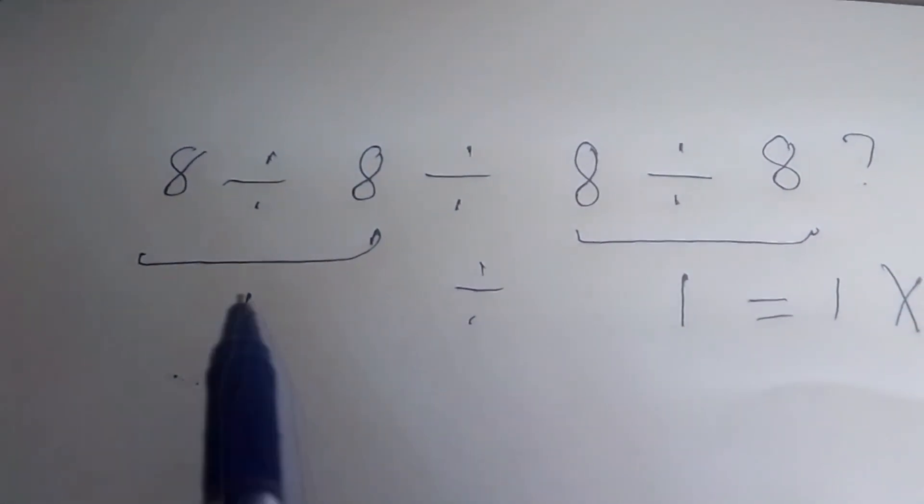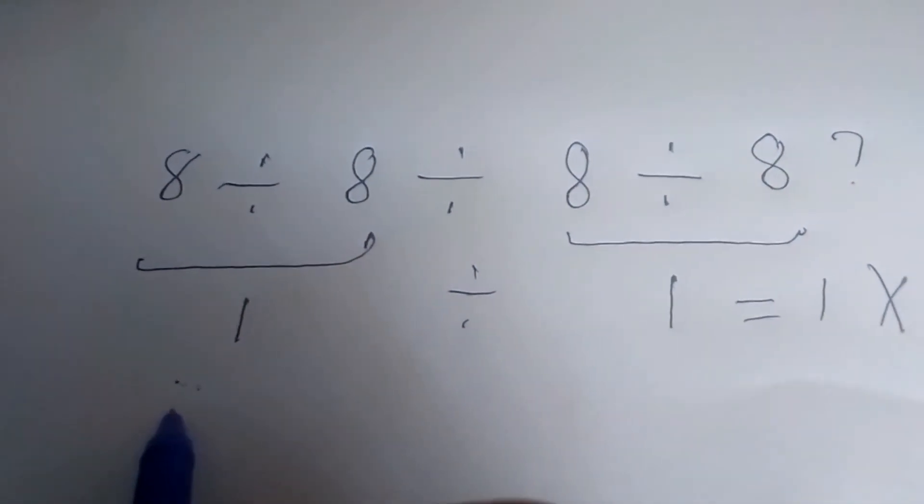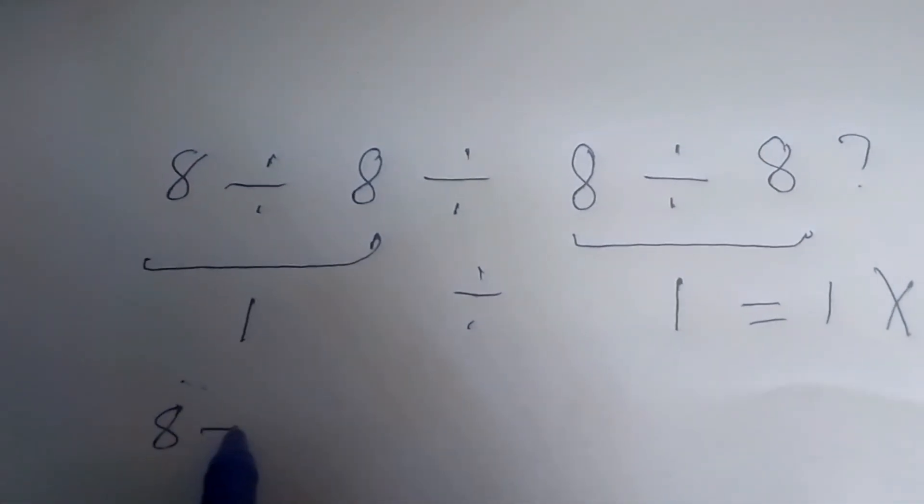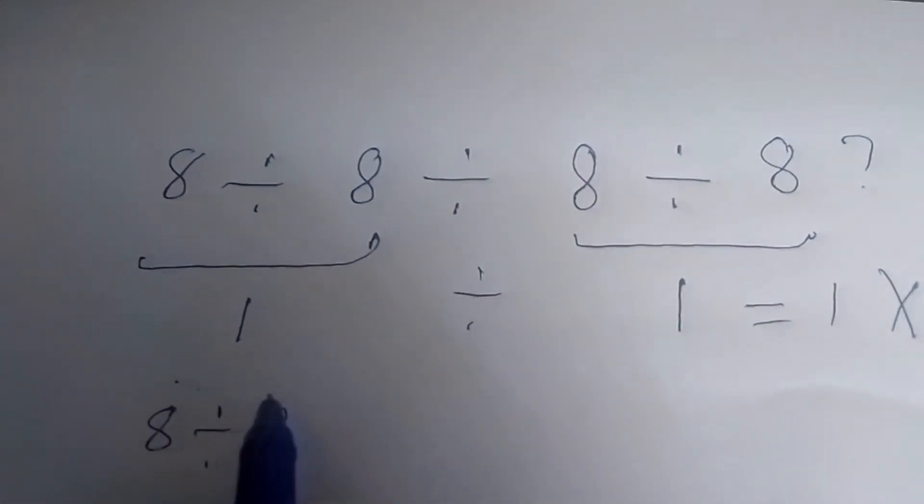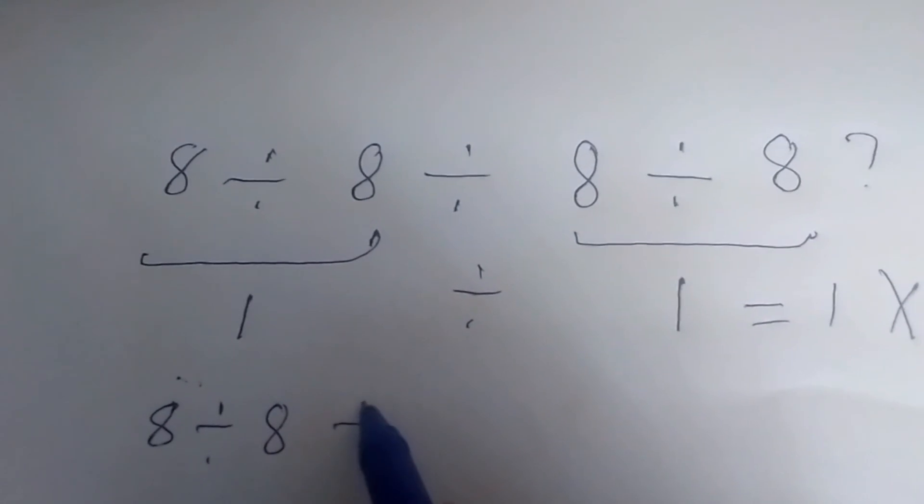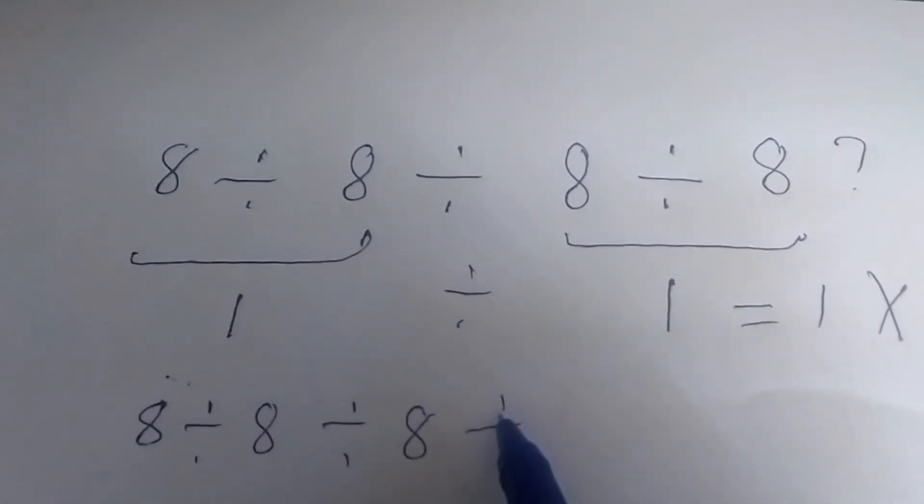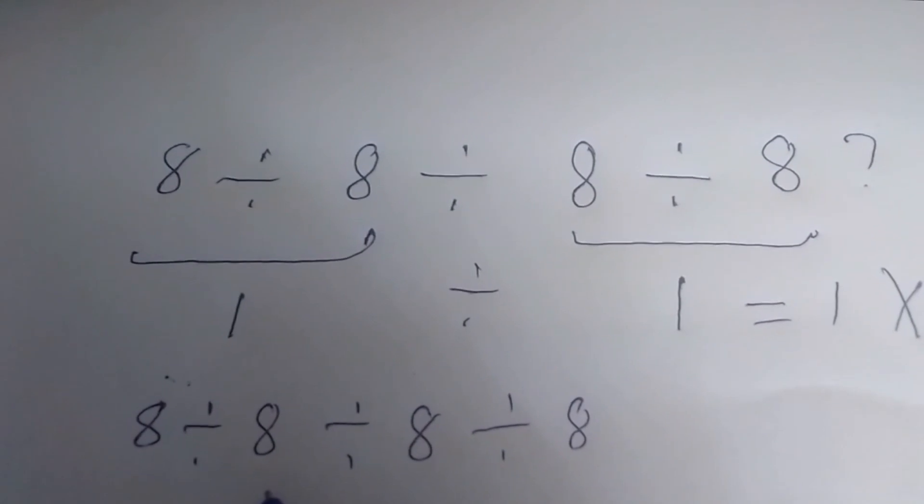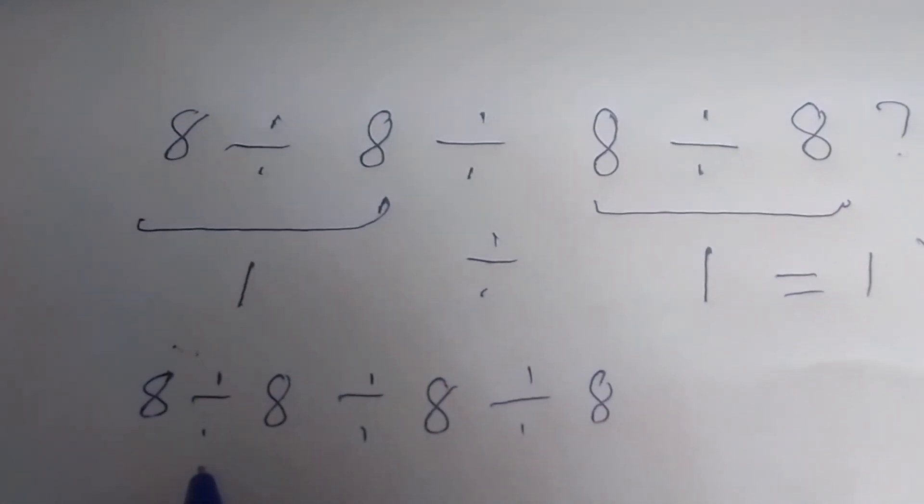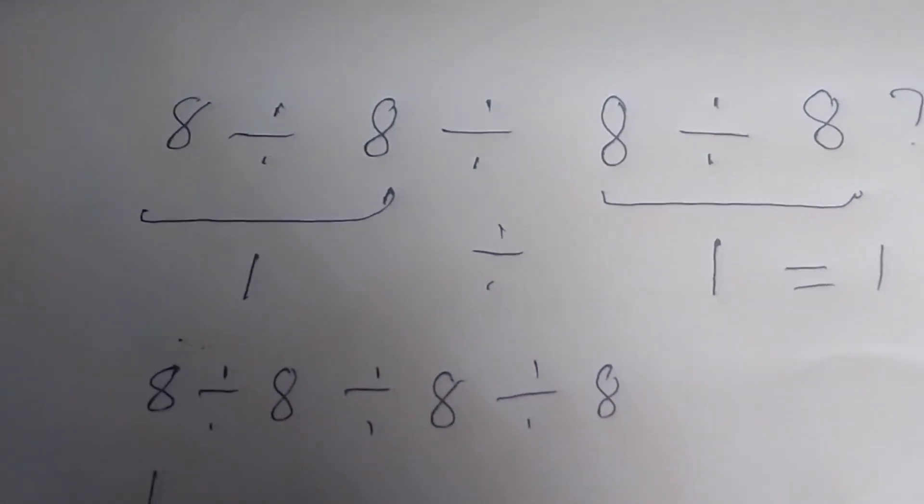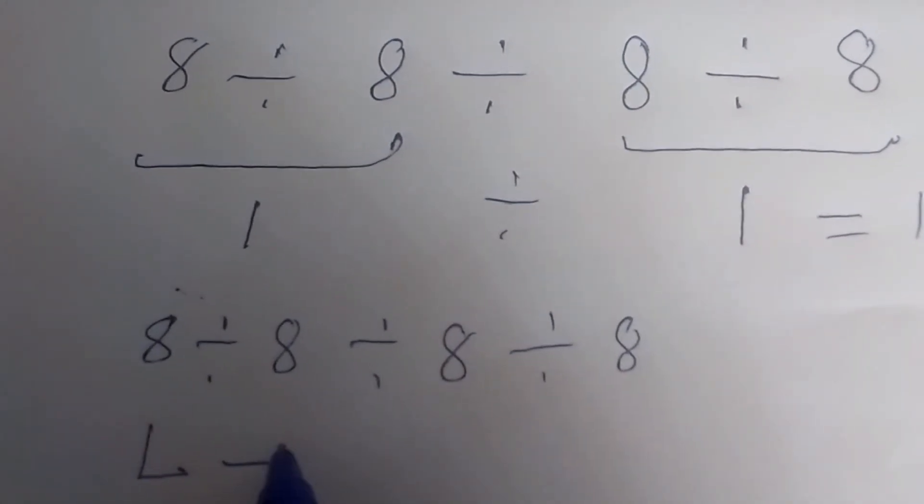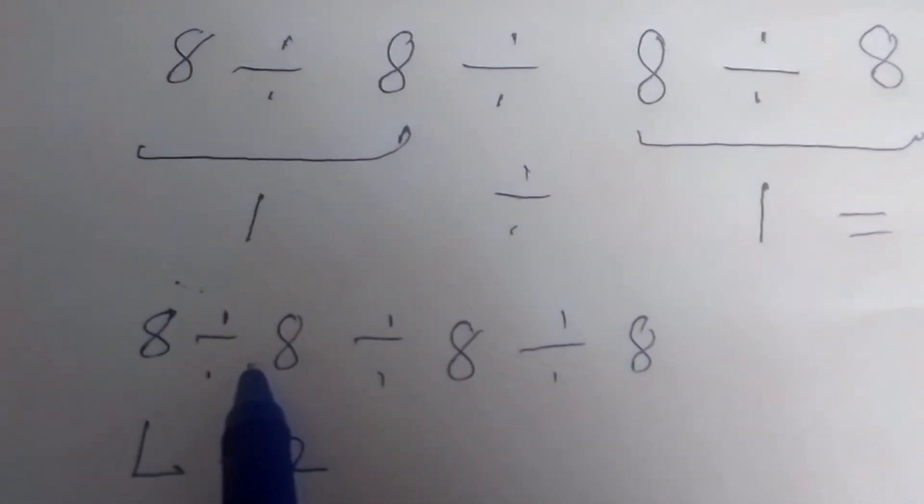So to solve this, we simply rewrite this: 8 divided by 8 divided by 8 divided by 8. According to PEMDAS, we solve from left to right. Left to right. So we will start from...